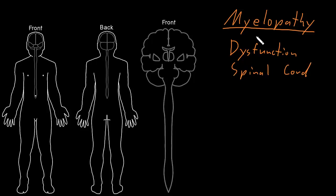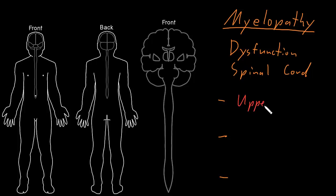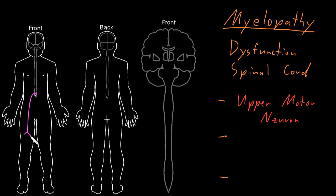We can get all sorts of abnormalities with myelopathy, but some of the most obvious things involve three functions — three types of neuron axons running through the spinal cord. The first of these are the upper motor neurons. Recall that we have lower motor neurons in the spinal cord that send their axons out to innervate skeletal muscle cells to tell them when to contract.